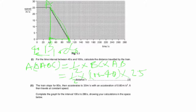The height is directly 25. So we calculate: 100 minus 40 equals 60, then half into 60 into 25. Calculating this gives 750 meters. So the distance traveled is 750 meters.